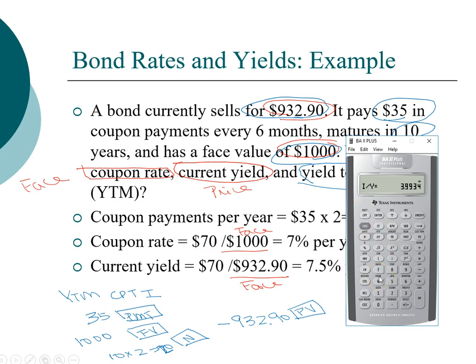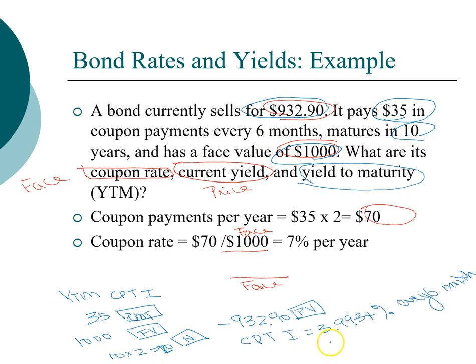So I is 3.99%. But remember, this is every six months. So to find the yield to maturity, we need to multiply that by 2. So on a per year basis, it's 7.9869% per year. So our yield to maturity is about 7.99%.